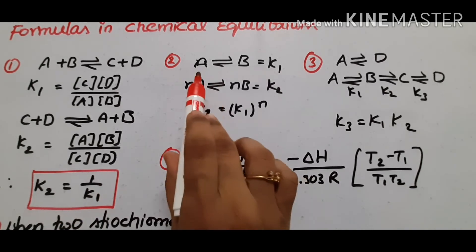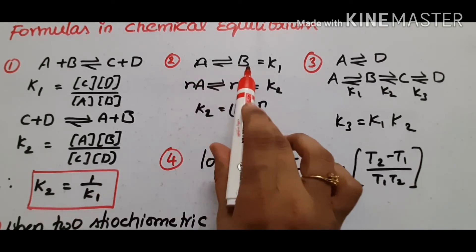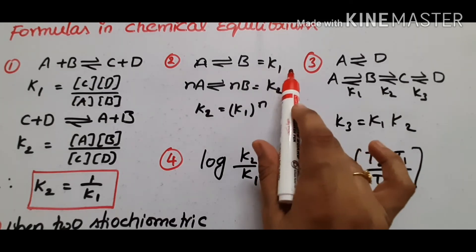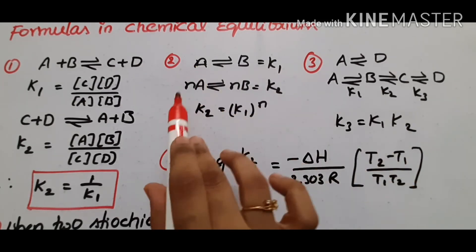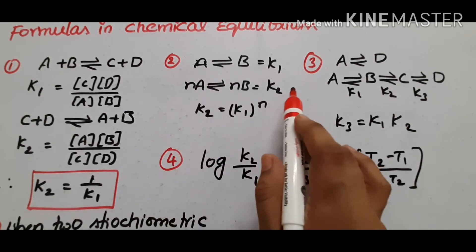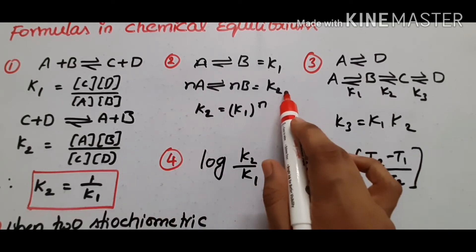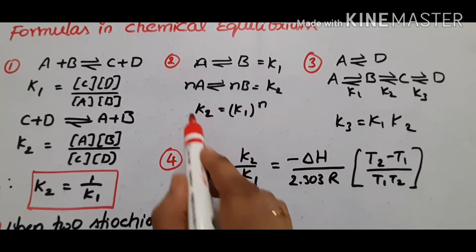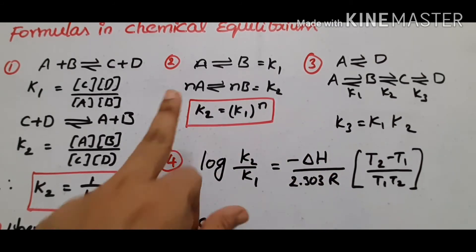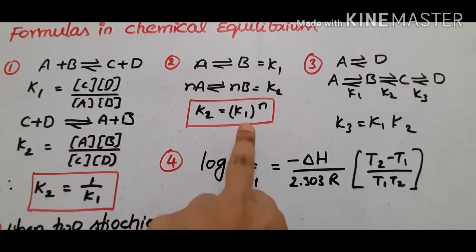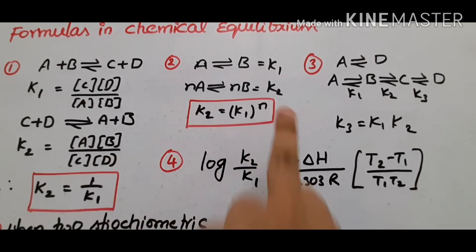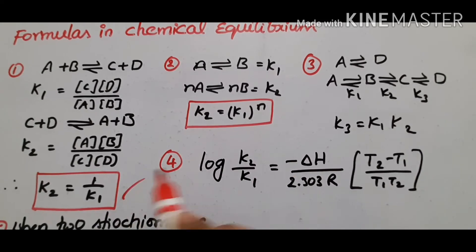If you have a reaction A reversible reaction to B with equilibrium constant K1, and you multiply the equation by N, the new equilibrium constant K2 equals K1 to the whole power N. Here N is the stoichiometric coefficient.